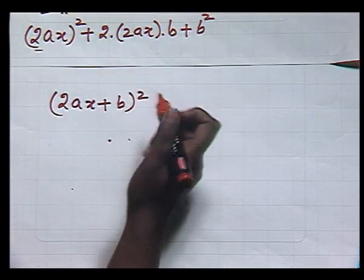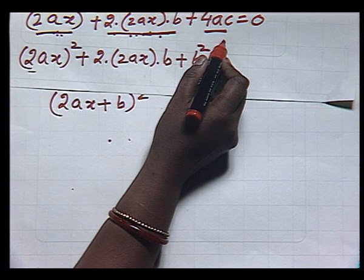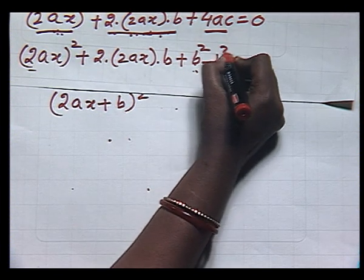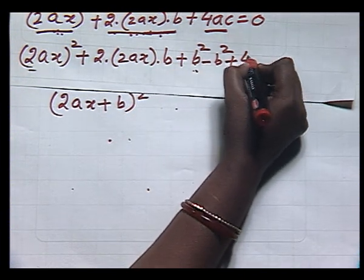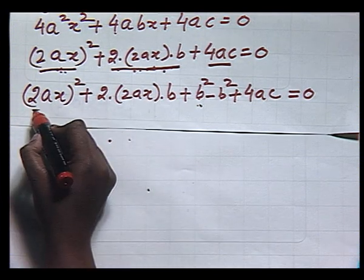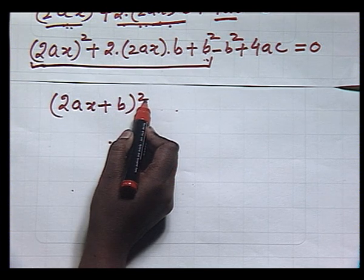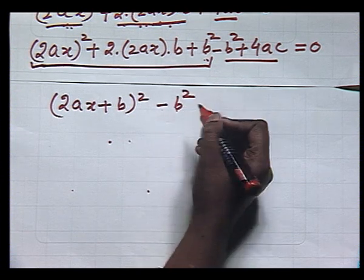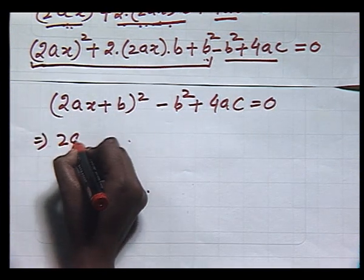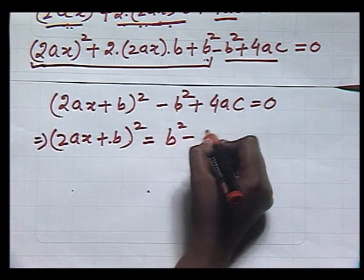But can we add any term to any expression? No, because that will change the value of the expression. So, what do we do to keep the value of this expression the same? We subtract the same term. Since we are adding B squared here, we will subtract B squared from the same expression, so that the value remains the same, and we add 4AC which was already there, equal to 0. These three expressions combine to give us (2Ax plus B) whole squared, and we are left with minus B squared plus 4AC equal to 0, which gives us (2Ax plus B) whole squared equal to B squared minus 4AC. Let this equation be 2.